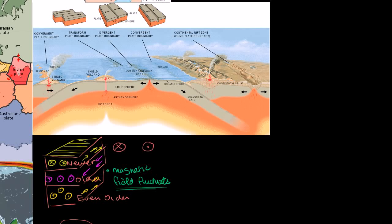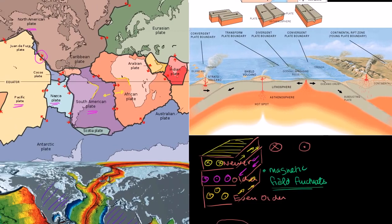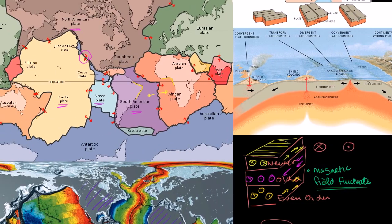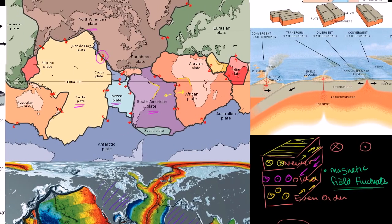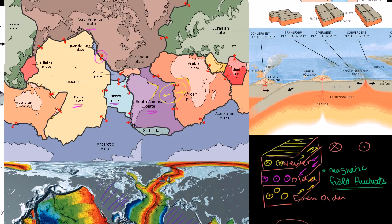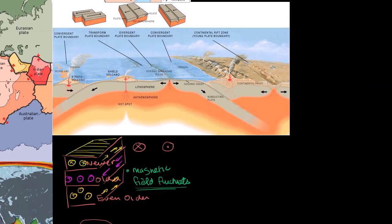Before we go into possible theories as to why plates actually move, what I want to do in this video is think about why we see the geological features we do see at plate boundaries. In particular, I want to focus on the features we see at divergent plate boundaries, where the plates are moving away from each other, where new land is being created, like we saw in the mid-oceanic ridges, where new land is created in the center and moves outwards. To do that, let's think about the different layers.